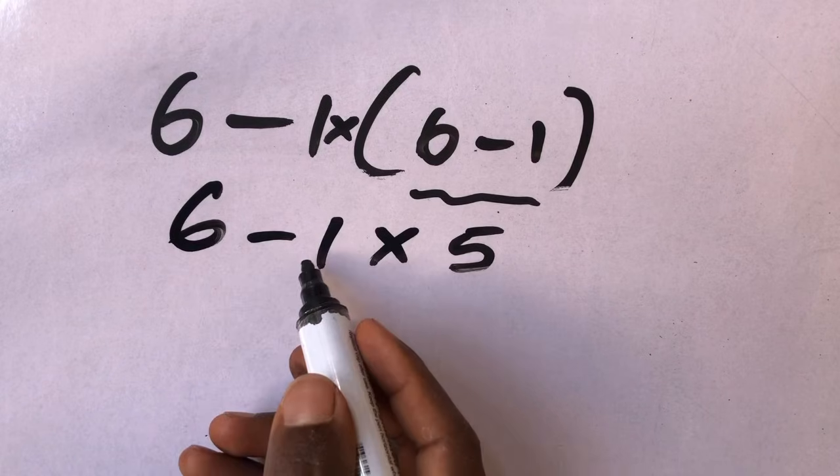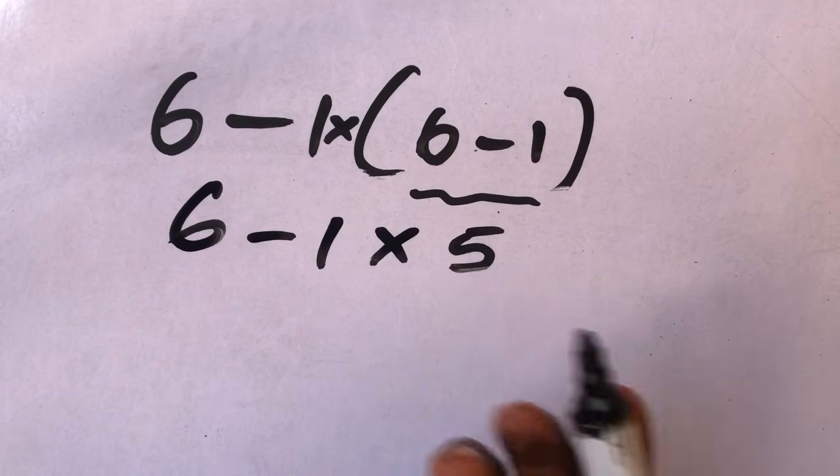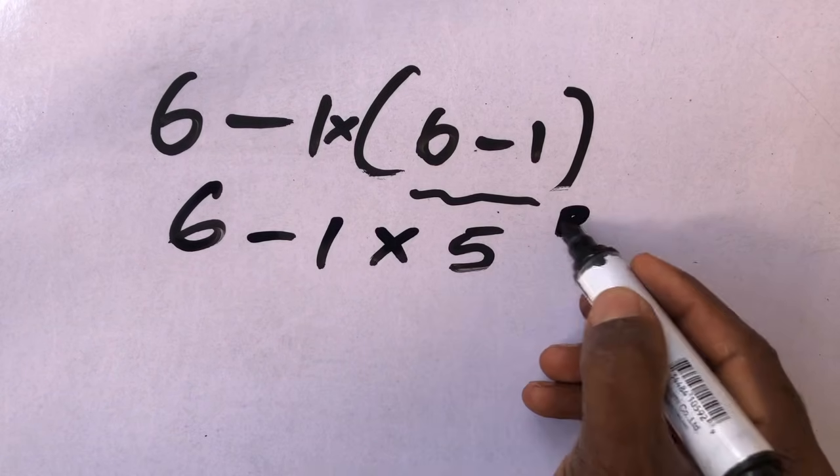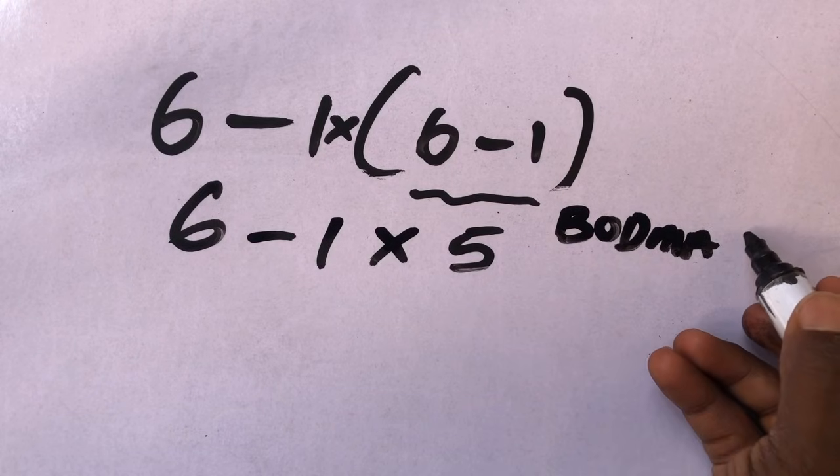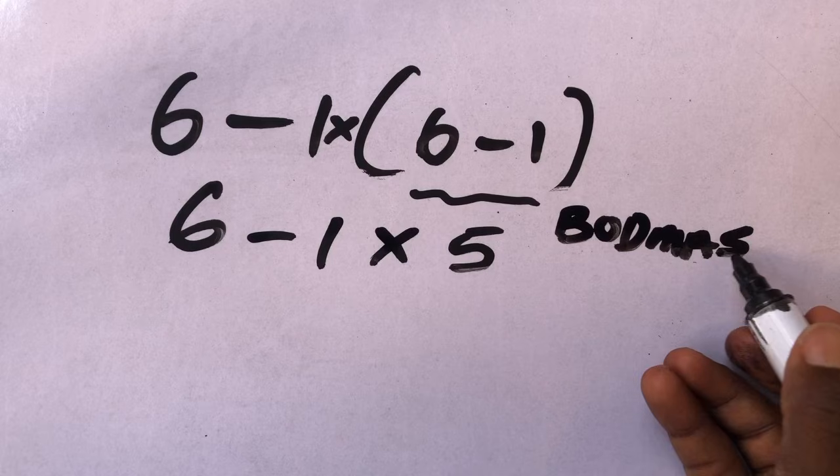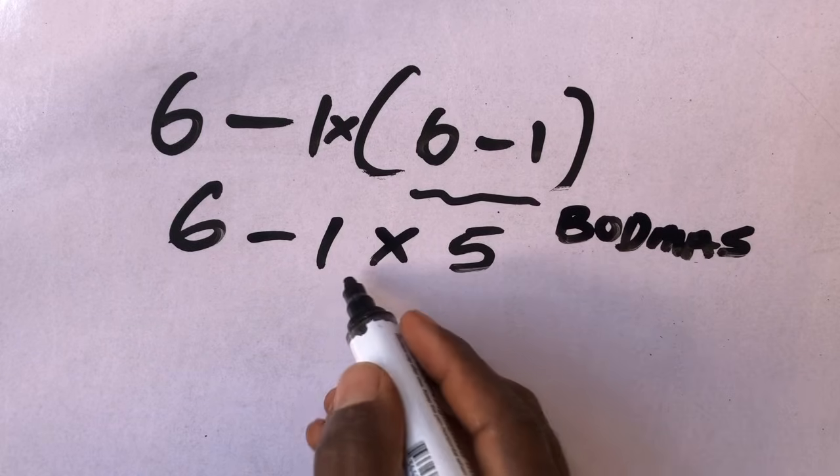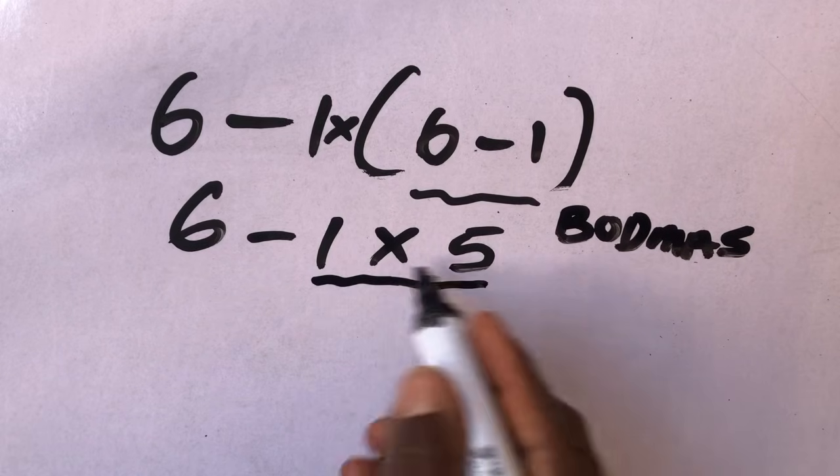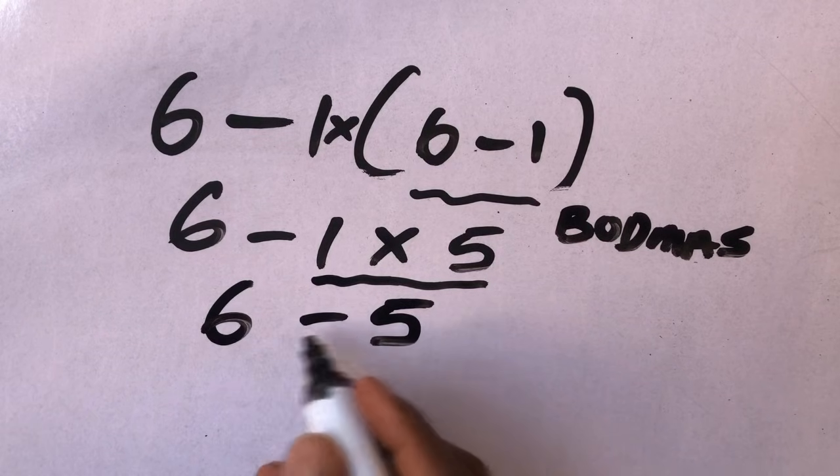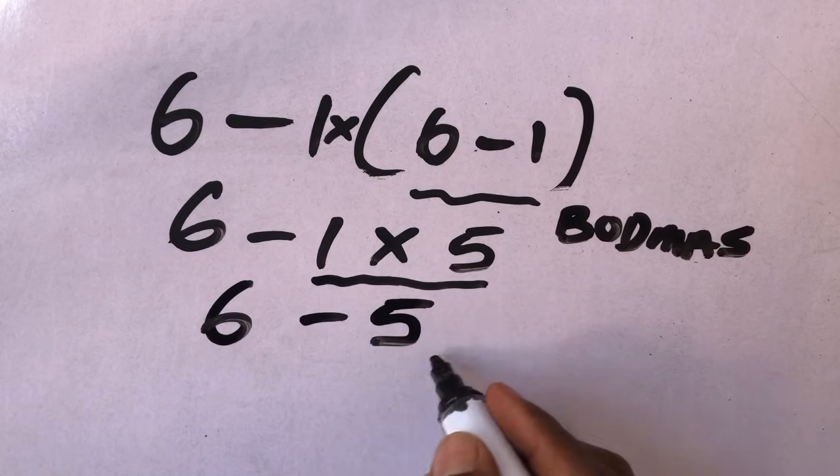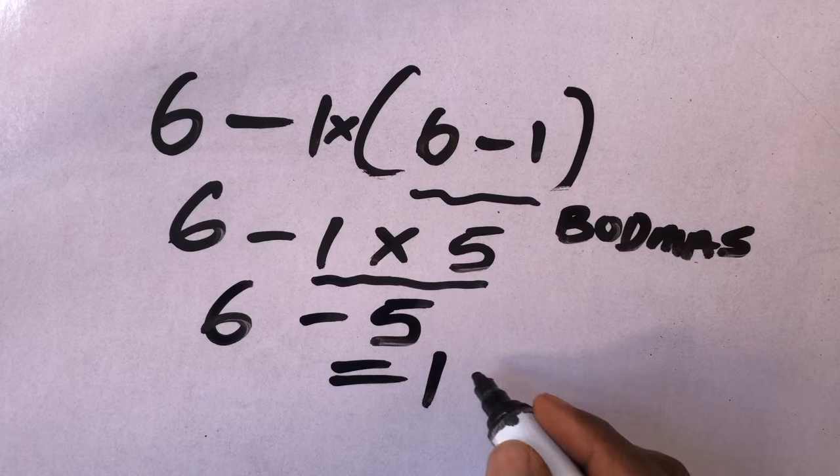So we have 6 minus 1 times 5. And the BODMAS rule states that we have to do multiplication. We have to do multiplication before addition and subtraction. So, we have to do this first. 1 times 5 will give us 5. Put our minus 6. 6 minus 5, which is equal to what? 1.